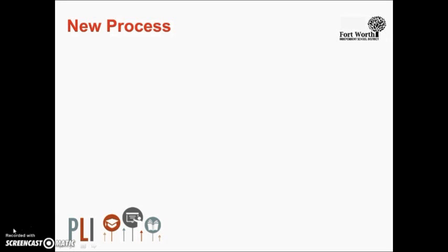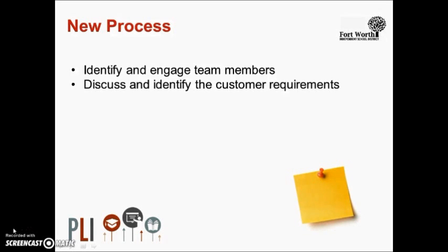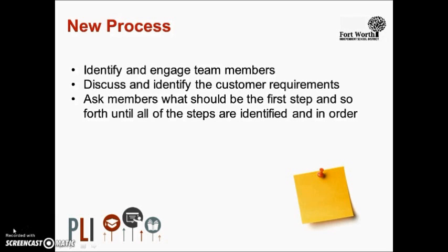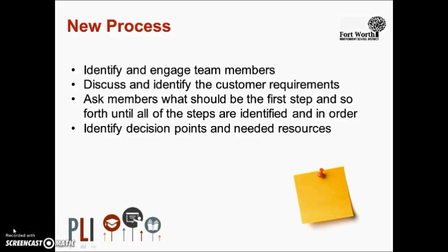The steps for developing a new process are similar to those for an existing process. With a new process, the facilitator engages team members responsible for deployment of the new project. You may want the team to establish group norms. As a team, identify the customer requirements associated with the new process — understanding them will ensure the correct process outcome. Ask each team member to think about the process and necessary steps, then as a group begin identifying each step, designating who is responsible. Record each step on a post-it note in the order discussed. Once all steps are placed on the chart paper or board, ask the team to review the order and confirm all steps are captured. Be sure to identify decision points and needed resources.